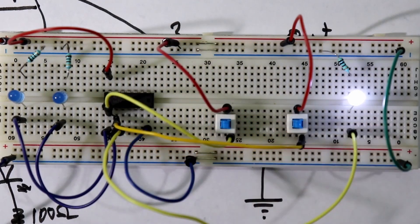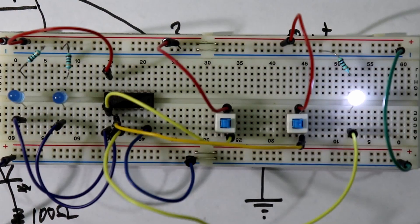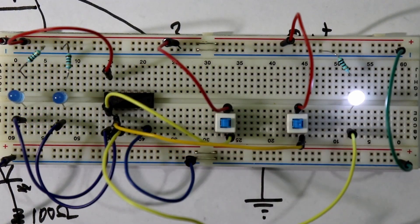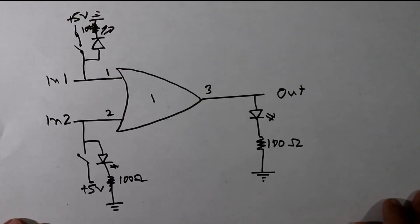But then also we are getting output. When I press the switch it should get the input and then it should glow. But without pressing it the LED is glowing. So we have to solve this problem. Let's see this circuit again.